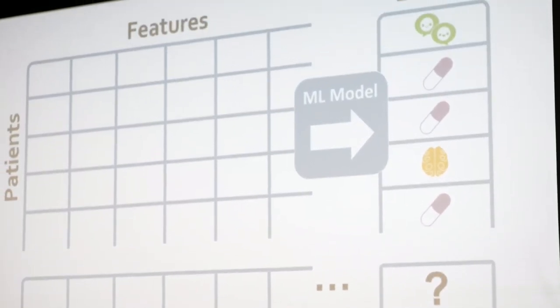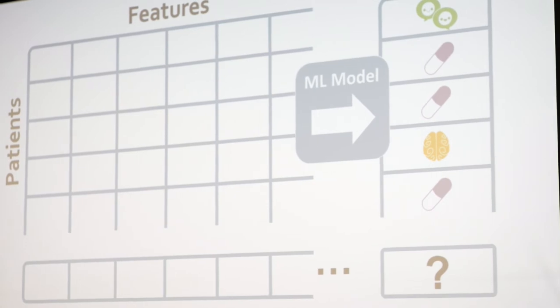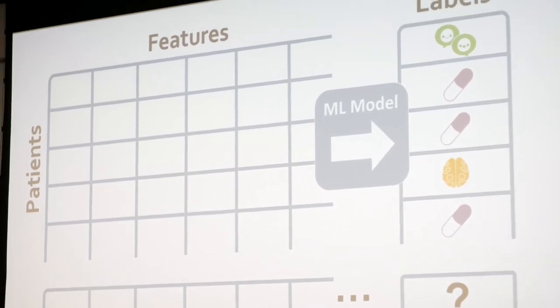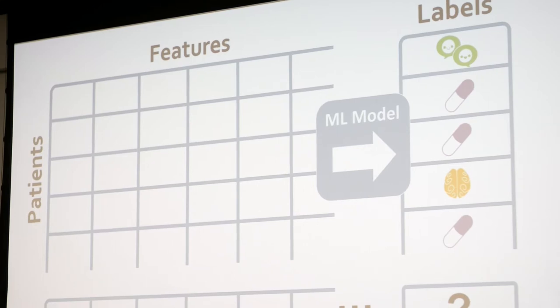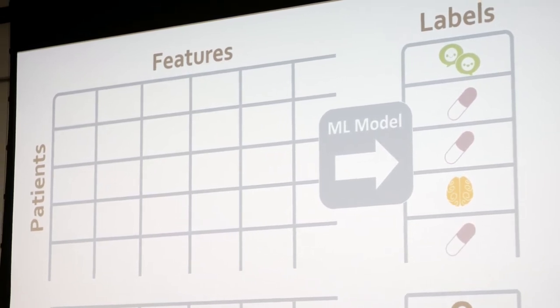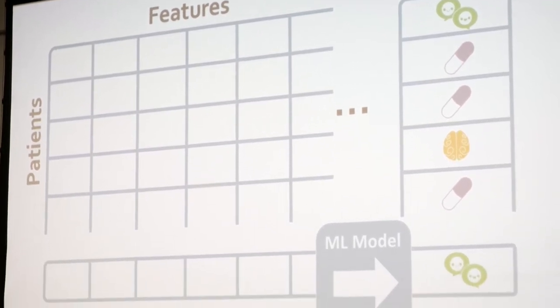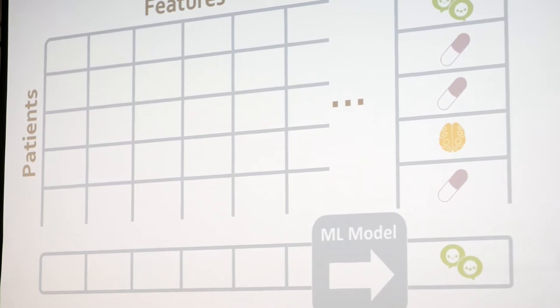What we can do with machine learning is use these different treatments as our labels. The idea is that when patients come into the office, before we start treating them we collect a bunch of information — the features we want — like blood tests and neuroimaging scans. Then we follow them to see what treatment works, and those outcomes become the labels: what medication worked best, whether psychotherapy was a good choice, or neurostimulation. We train our machine learning model on that information, so now we have a model that maps from features to the most effective treatment. When a new patient walks through the door, we can use that trained model to predict what their best treatment option would be.